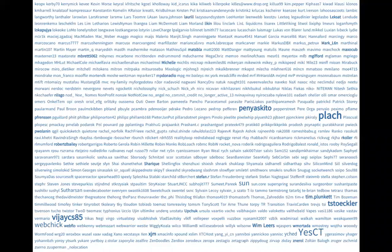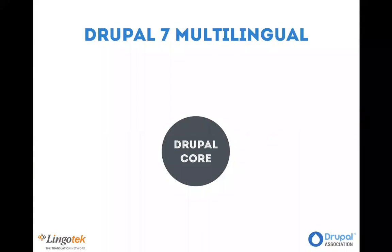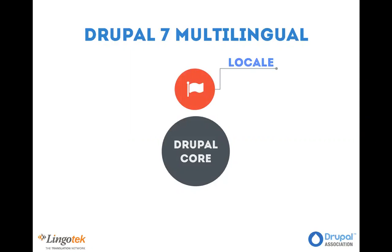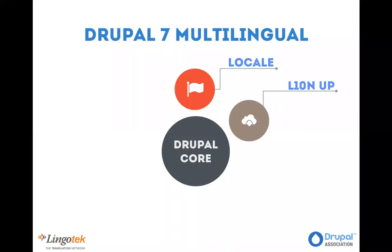The reason we started working on this is because people have been building multilingual sites on Drupal for quite a while, but the experience was very far from perfect. In Drupal 7, to make a site multilingual there are a lot of components to consider. First, you need to set up languages, managed by the locale module, which allows a list of languages and interface translation. However, interface translation works with files uploaded from your computer — if you have a hundred modules and five languages, you need to manually locate 500 files, download them, and upload them. So we built the localization update module to automate that.